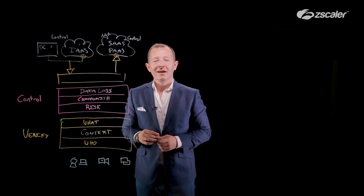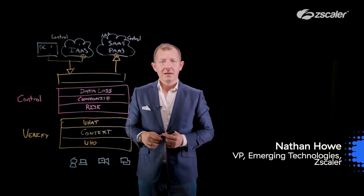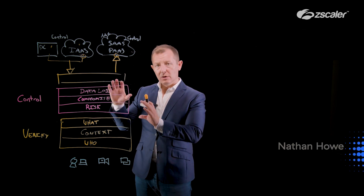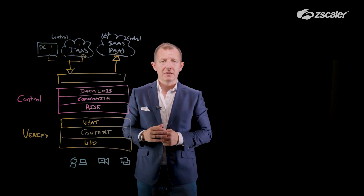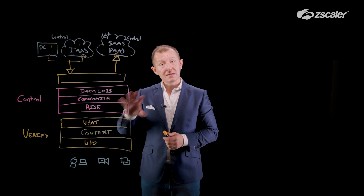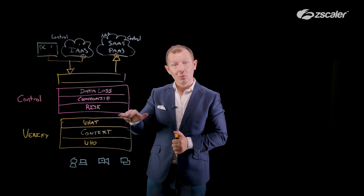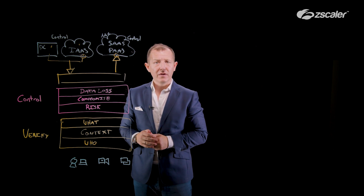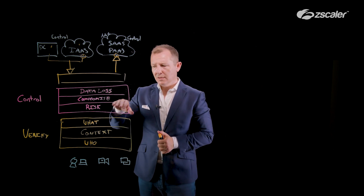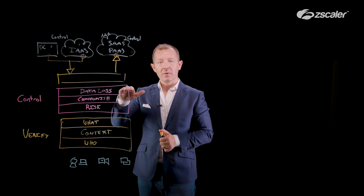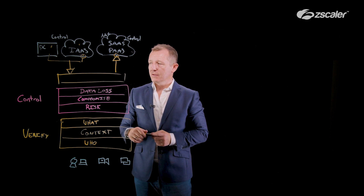Hi everybody, I'm Nathan Howe, Vice President of Emerging Technologies here at Zscaler. We've already spent some time going through the two earlier buckets of an effective Zero Trust architecture, where we covered the six main elements: the who, the context, and what of the verify phase, and then in the control phase, understanding the risk, compromise prevention, and data loss prevention.